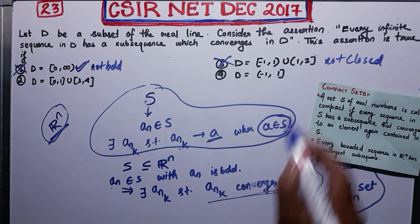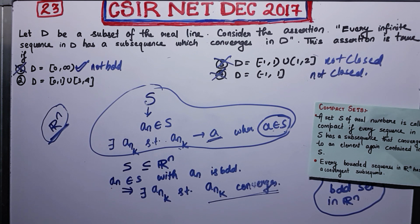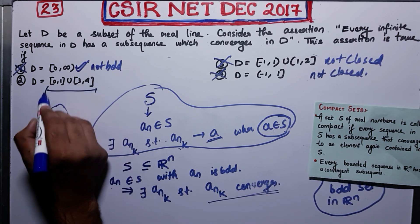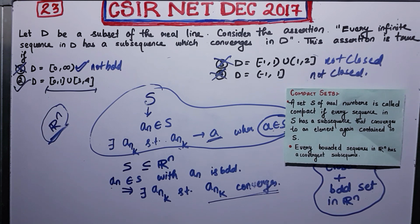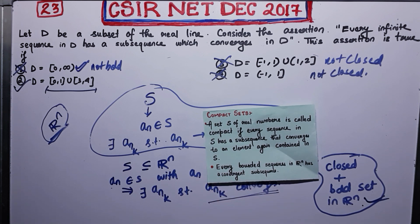Now the fourth option is also not closed — minus one is a limit point but it does not belong to the set, therefore it is not closed. Now the second option is both bounded and closed, therefore it is compact. So the second option is correct. The only thing required to solve this question is knowing these two definitions. By using these definitions you can finish this question in just one or two minutes. Thank you guys.